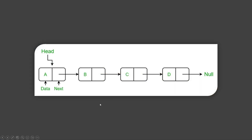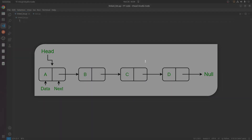A linked list is a linear data structure that stores data in non-contiguous memory locations. The smallest unit of a linked list is a node, and a node comprises two variables: the first is data, and the second is a pointer variable that points to the next node. By convention, the first node of a linked list is called head and the last node is called tail.